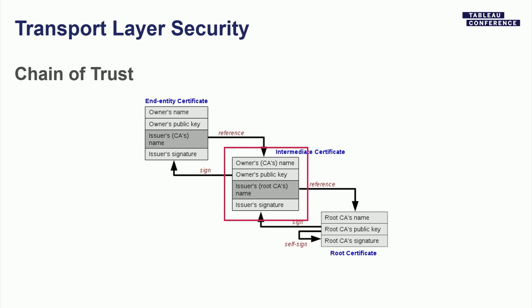There's a chain where every certificate has an issuer, and you can trace these all the way back. Eventually you arrive at a root certificate authority, or root CA. This root CA also has a certificate, but it's self-signed — meaning the root CA is saying: I am who I say I am, and I don't rely on anybody else's validation. If you arrive here through a chain of certificates originating from Tableau Online, and if you trust this root CA, you can also trust Tableau Online. This is called a chain of trust.